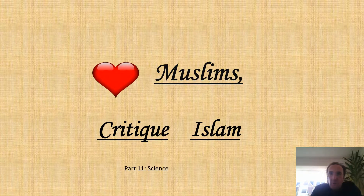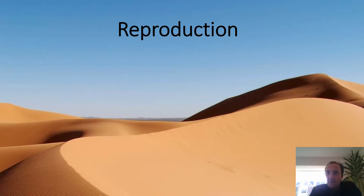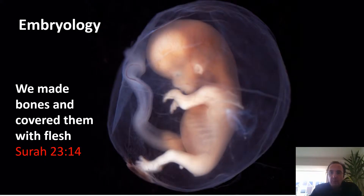I'll take you on a journey of absolute truth. Astonishingly, for a book sent down from the divine — Allah himself — the Quran has an awful lot of scientific errors. Let's show you a few, starting with reproduction. We read this in Surah 23:14.